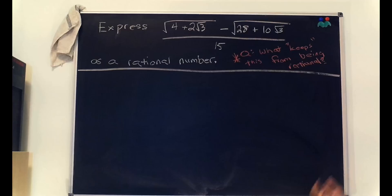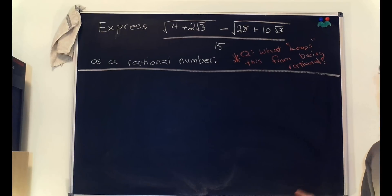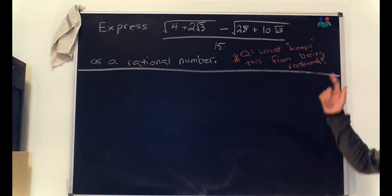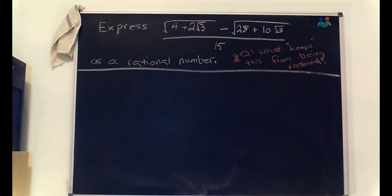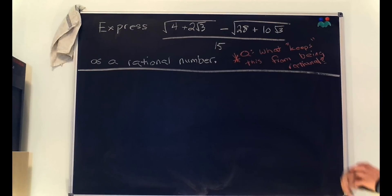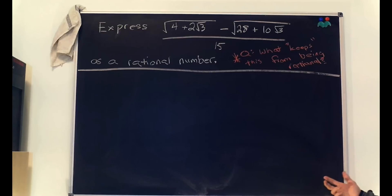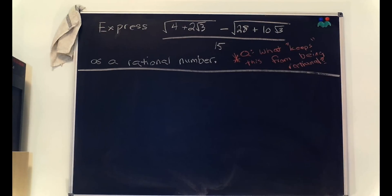I want to point out quickly that this problem was from the LACC math contest in, I believe, 2011. So let's go ahead and jump into this. We have the square root of 4 plus 2 times the square root of 3, minus the square root of 28 plus 10 times the square root of 3. These are important because we have the same radical underneath the larger radical in both cases. Let's focus these down and see if we can remove the big radical and see if this smaller radical figures itself out.